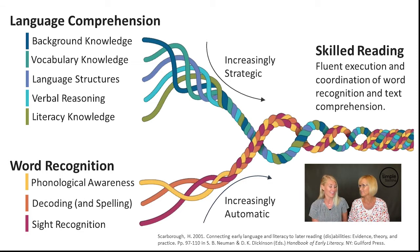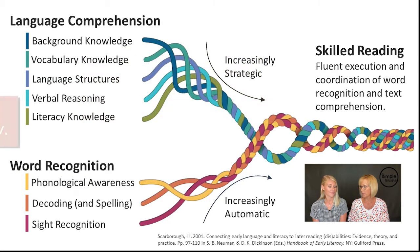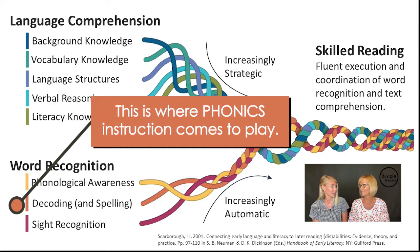Under word recognition, all of these things need to be connected to why we're doing this. We start out with phonological awareness — the skills include all the different levels: syllable, onset-rhyme, word, all the levels. Phonemic awareness is the strongest element found to improve or lead to skilled reading. So we want to make sure that we do teach phonological awareness. Then we have decoding, which gives us phonics. An effective phonics lesson should always start with a piece of phonemic awareness, connecting those together — hence the name phonics: sound-spelling, connecting the sounds and their spellings and learning how to blend and decode.